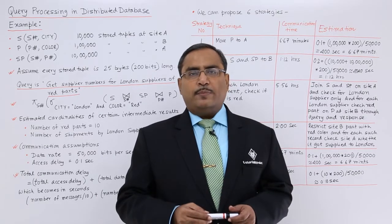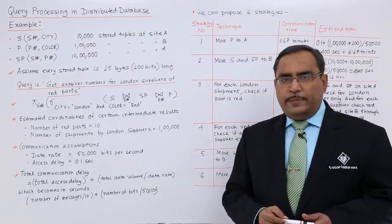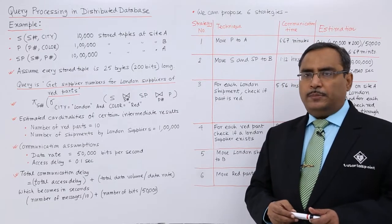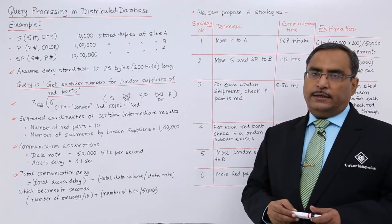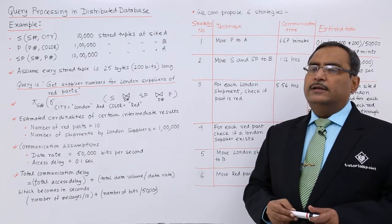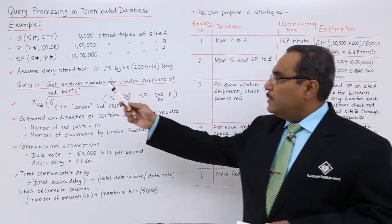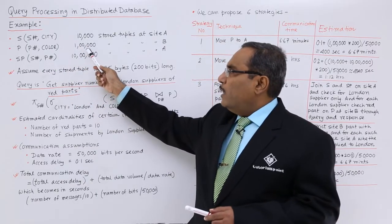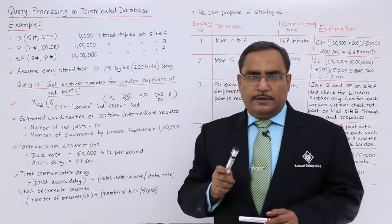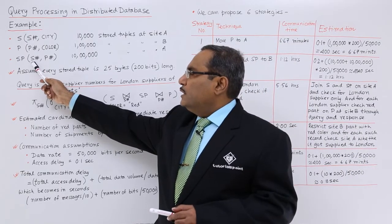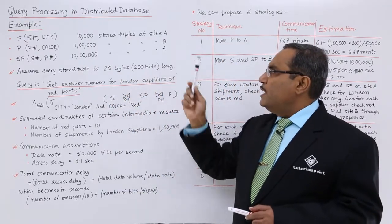We are having one example with a database having three tables. The first table is the supply table, denoted by S, having two attributes: supply number and city, with 10,000 tuples stored at site A. Next is the parts table, denoted by P, having two attributes: part number and part color, with one lakh tuples stored at site B. The third table is the shipment table, denoted by SP, having two attributes: supply number and part number, with 10,000,000 tuples stored at site A.